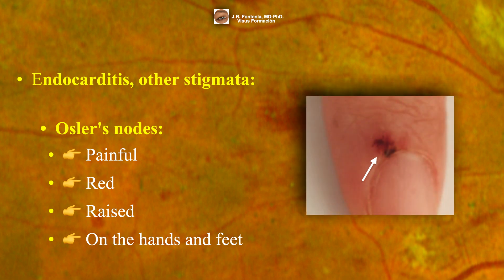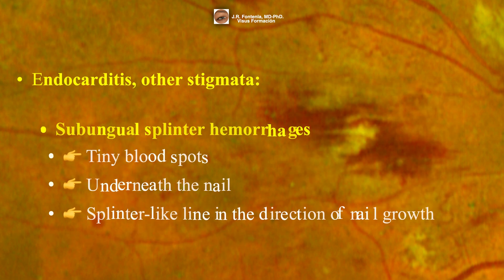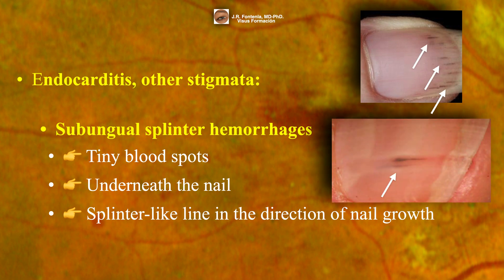Osler's nodes are painful, red, raised lesions found on the hands and feet. They are caused by immune complex deposition. It is important to remember that Osler's nodes are painful lesions, whereas Janeway lesions are not. Splinter hemorrhages are small spots of blood from damaged blood vessels that appear under the nail and become visible through the nail. The bleeding creates a splinter-like line in the direction of nail growth.